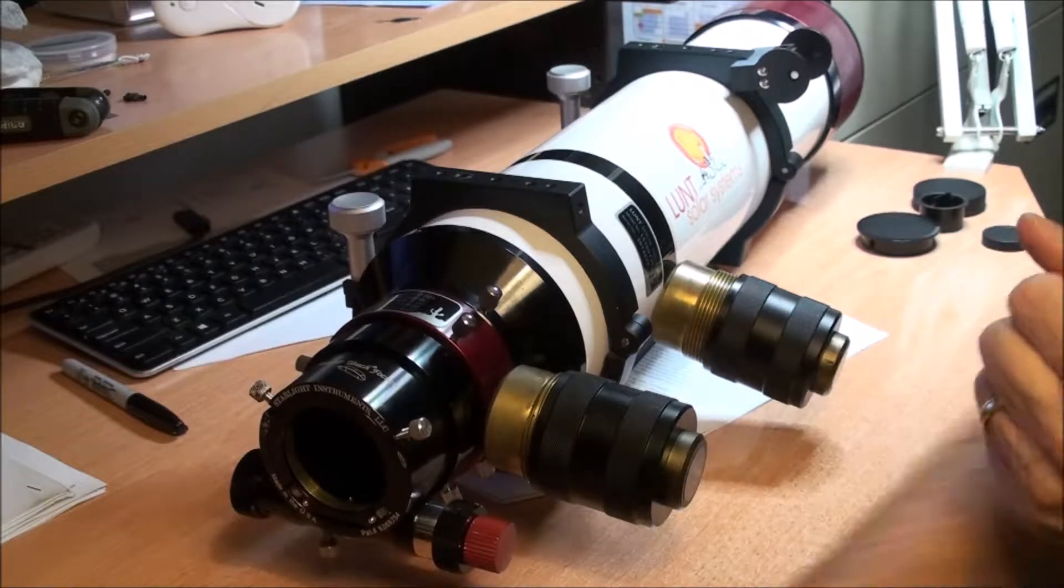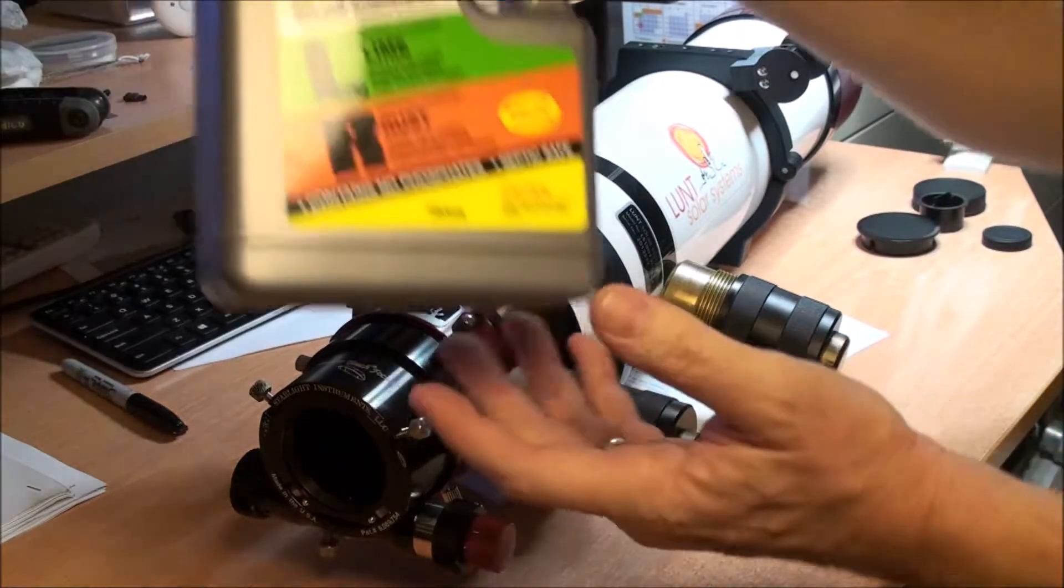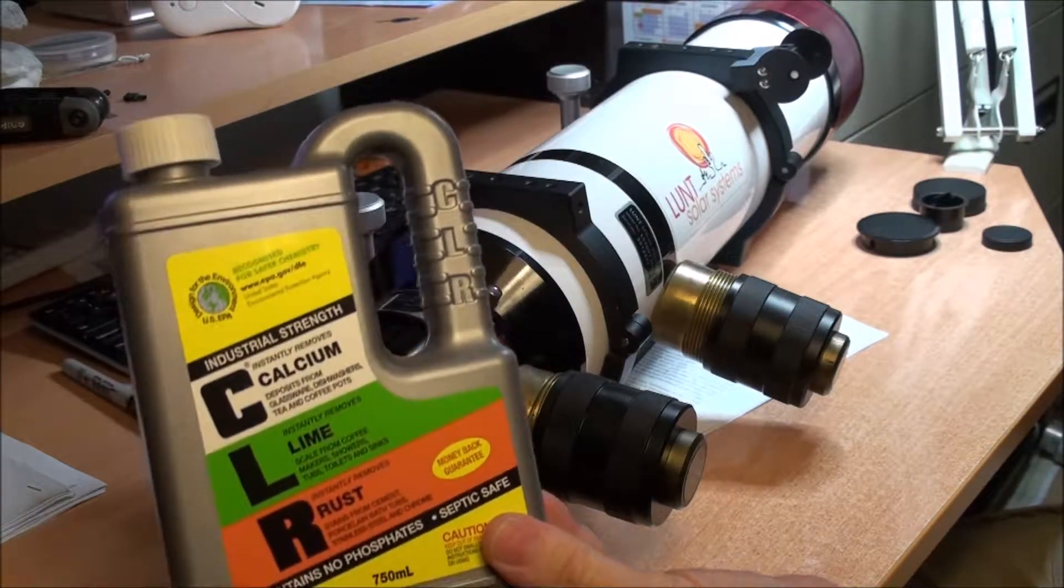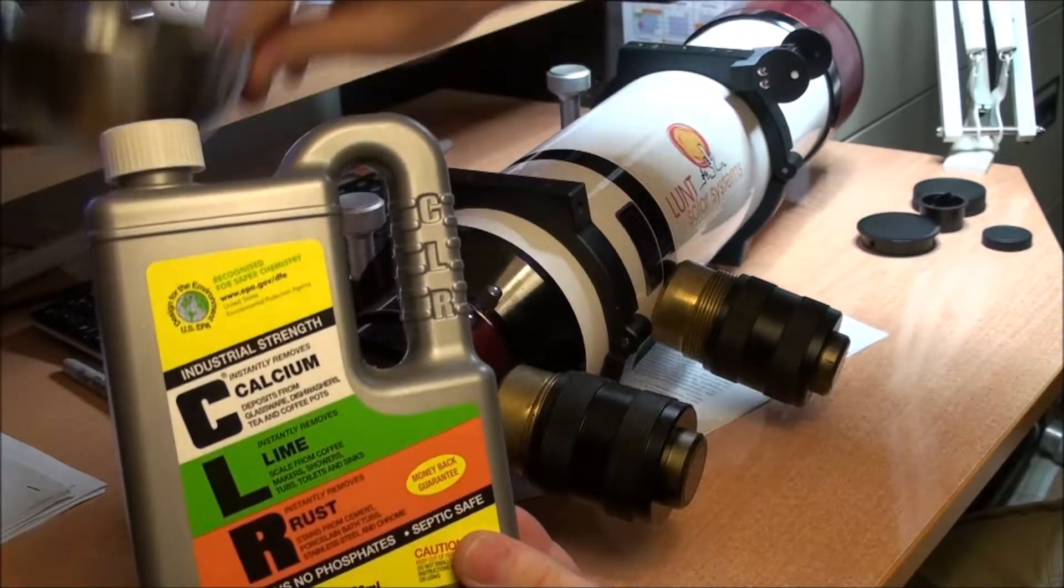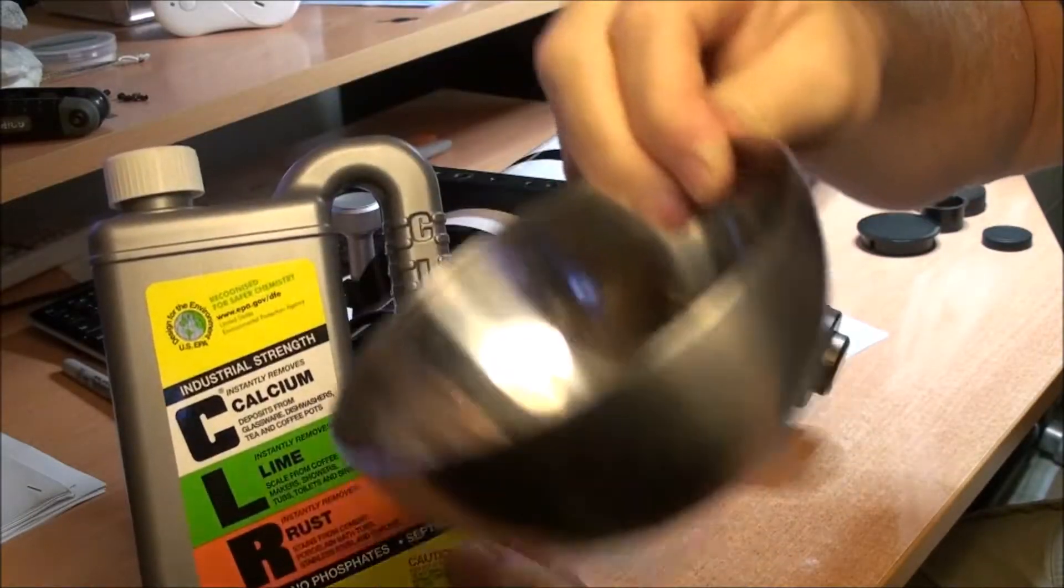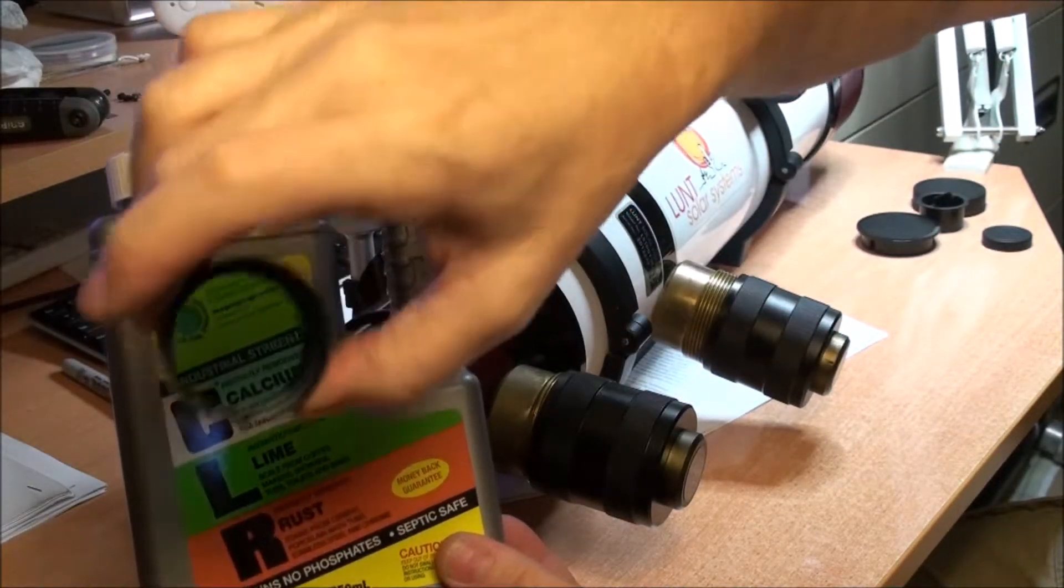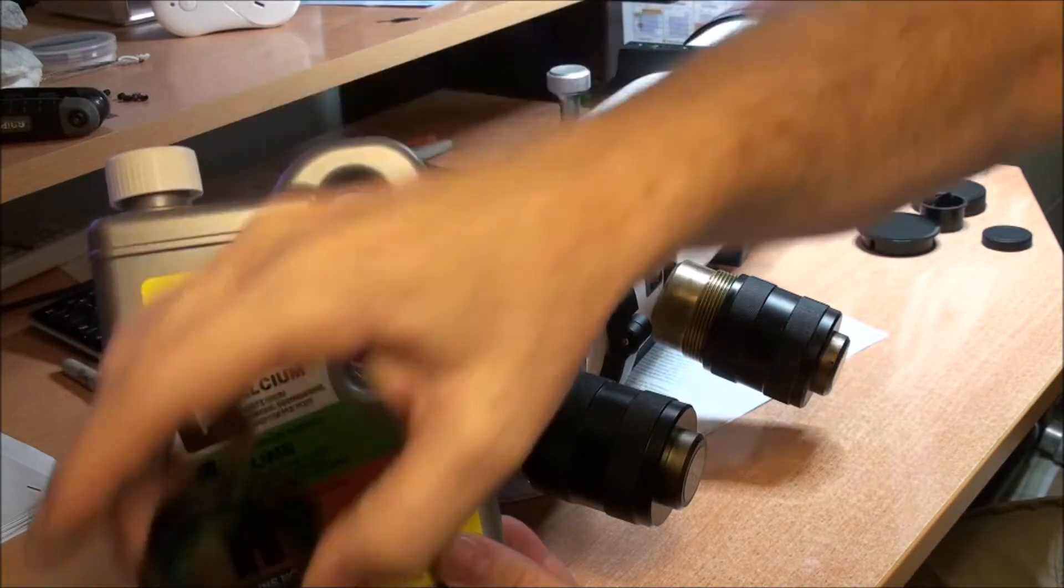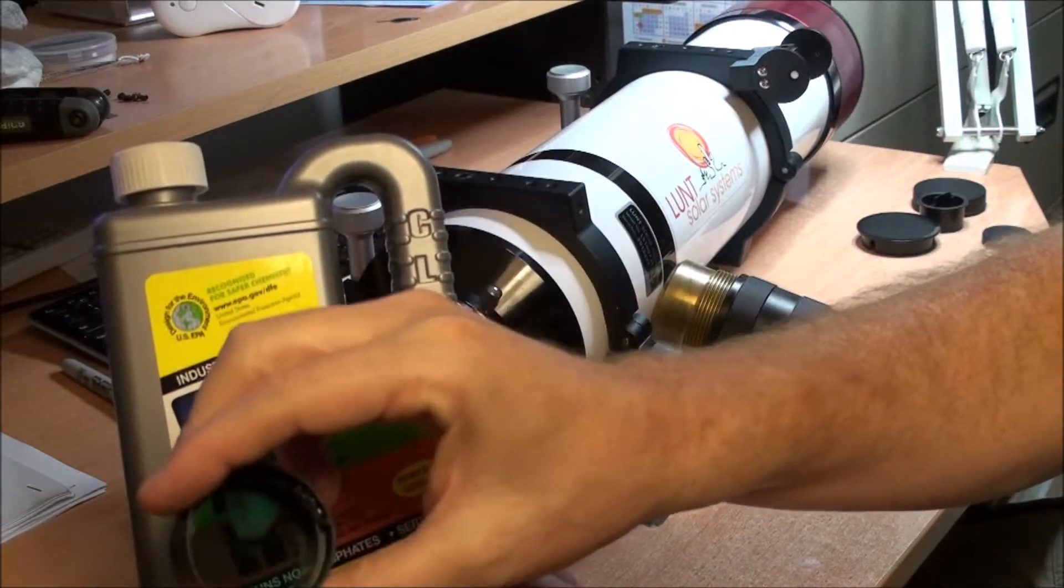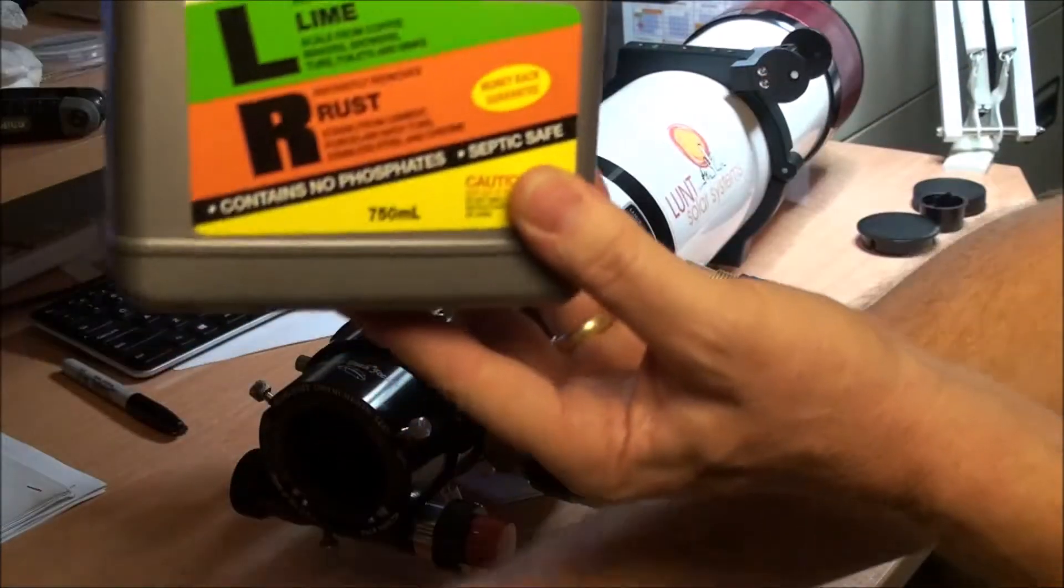And the magic, the Australian magic at least, to getting rid of anything and cleaning it up is CLR. It's great. Literally all you do is put a container such as this one, half fill it with CLR, and gently place this element in it. Go away, have a cup of tea, come back in 5 minutes, give it a good rinse, wipe it down with that optical cloth again, and it will come up absolutely sparkling. No problem at all.